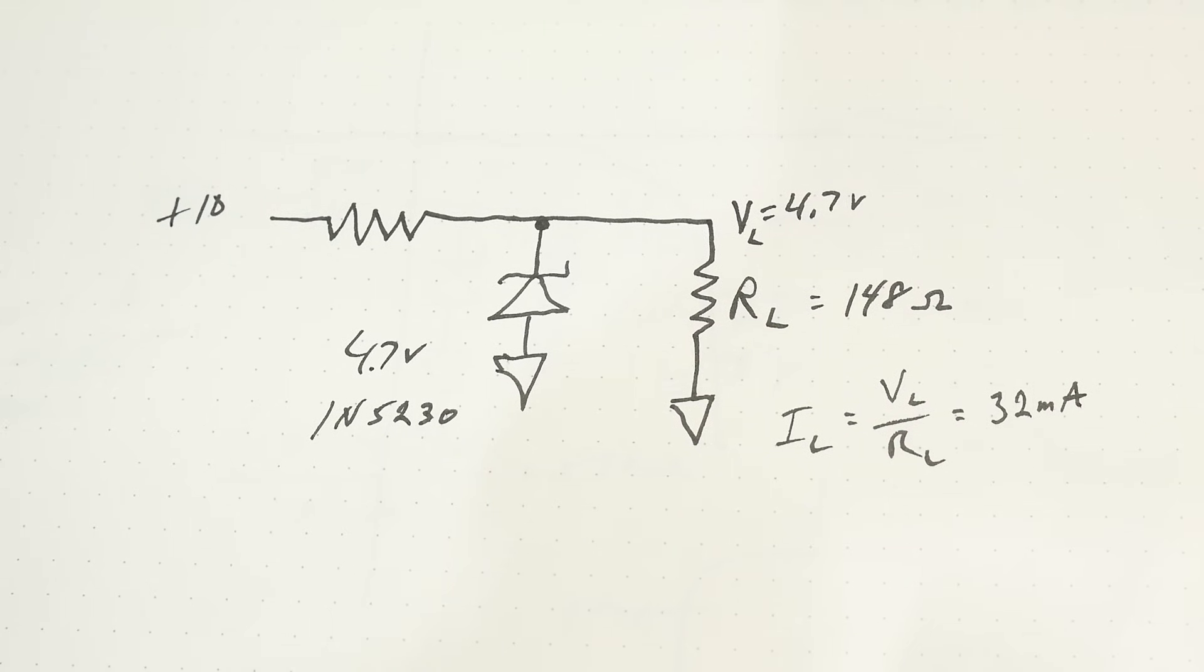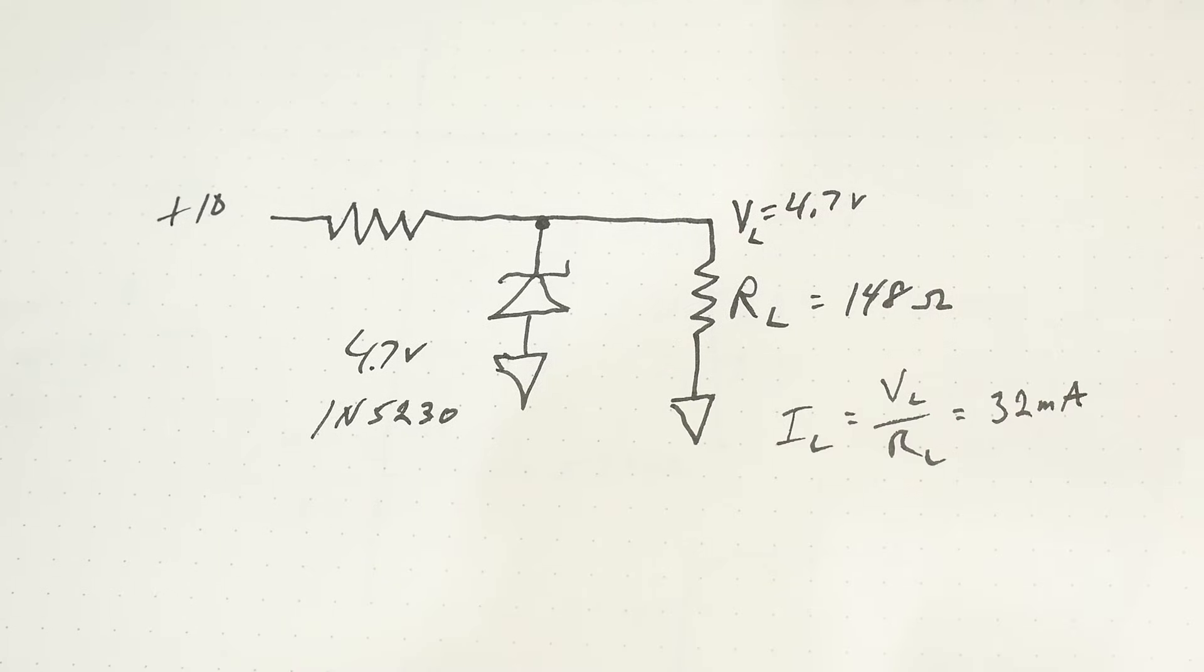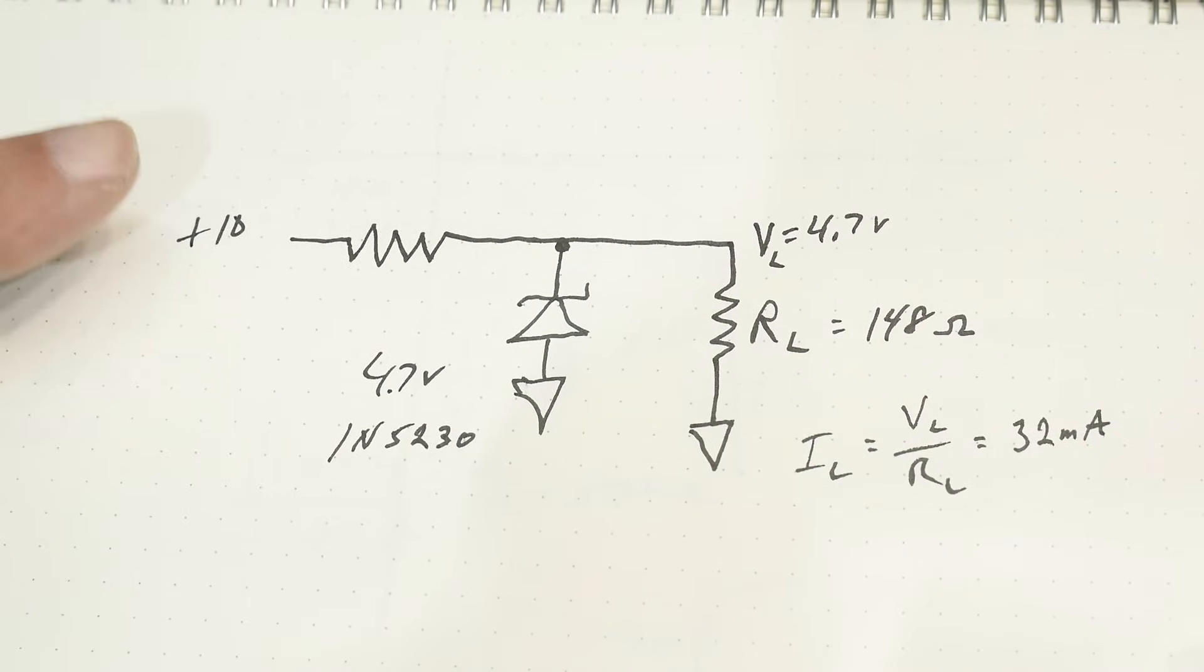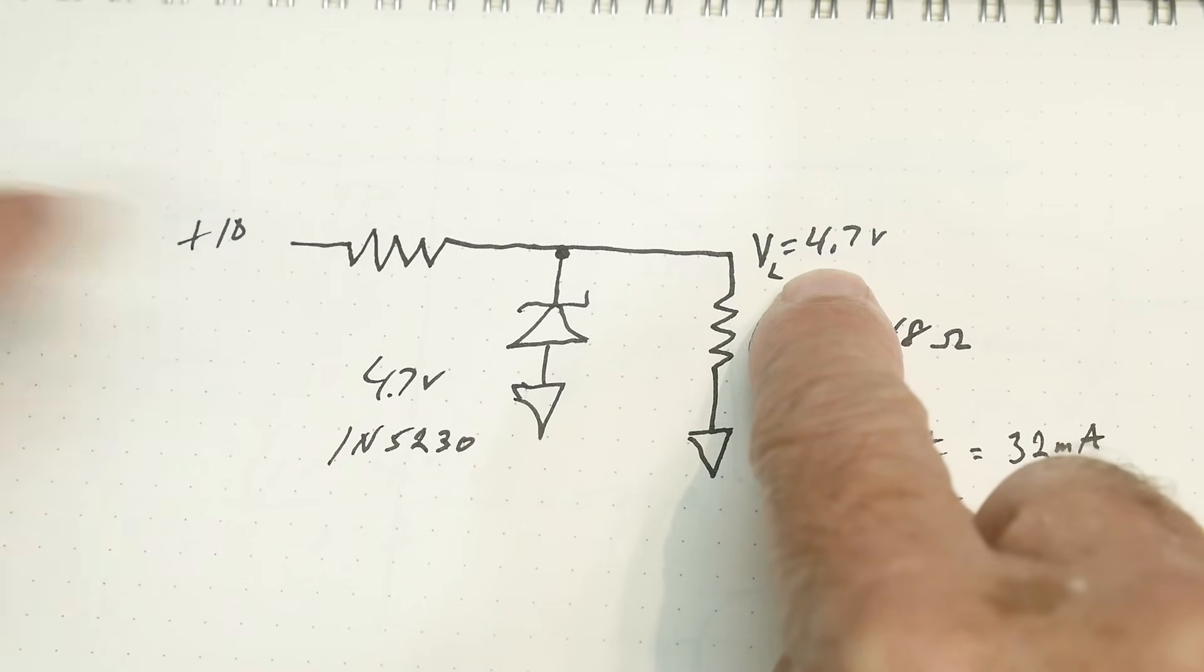So that's a few op amps and some other things. So you can get quite a bit of analog circuitry for about 32 milliamps. So it's a reasonable load to be thinking of a power supply. And so we're going to start out with 10 volts. So we have to drop 10 volts down to 4.7 volts.